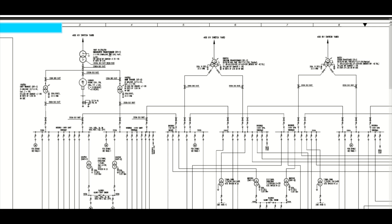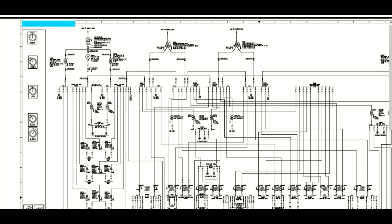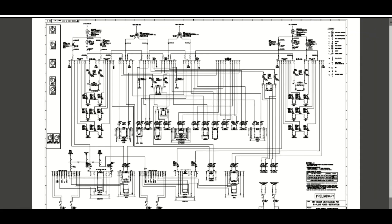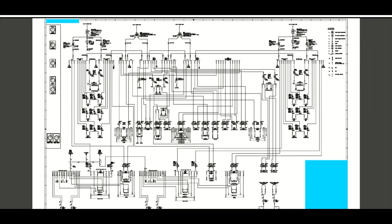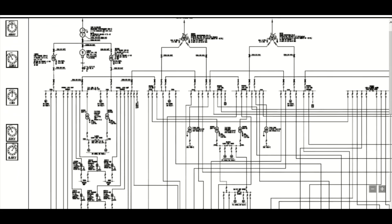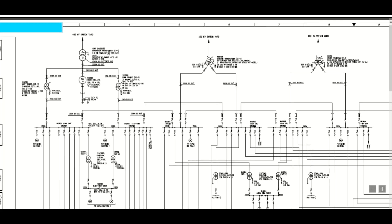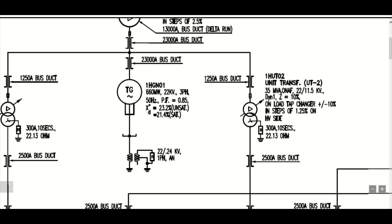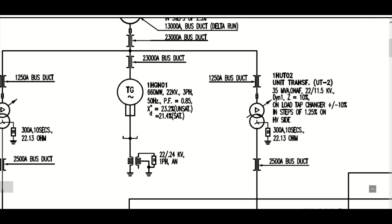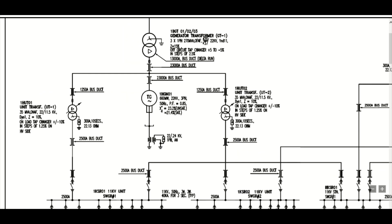This is a key single line diagram of a power plant. Today I will discuss about this key single line diagram. Here, as you can see, this is the generator — this is the steam generator. This unit is 660 megawatt; generation voltage is 22 kV, three-phase, 50 Hertz, power factor 0.85. This is one steam turbine generator.